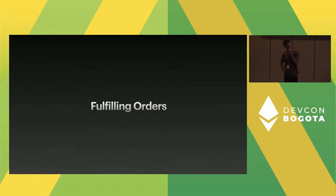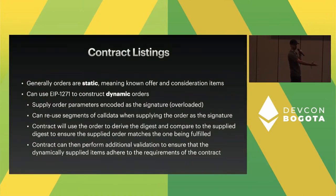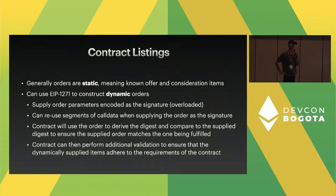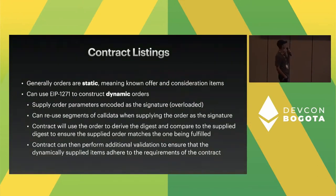This is for when you have a contract that is going to serve as an offerer with its own validation logic. It could also utilize a zone — it's very much something that could piggyback on validation logic in a zone.